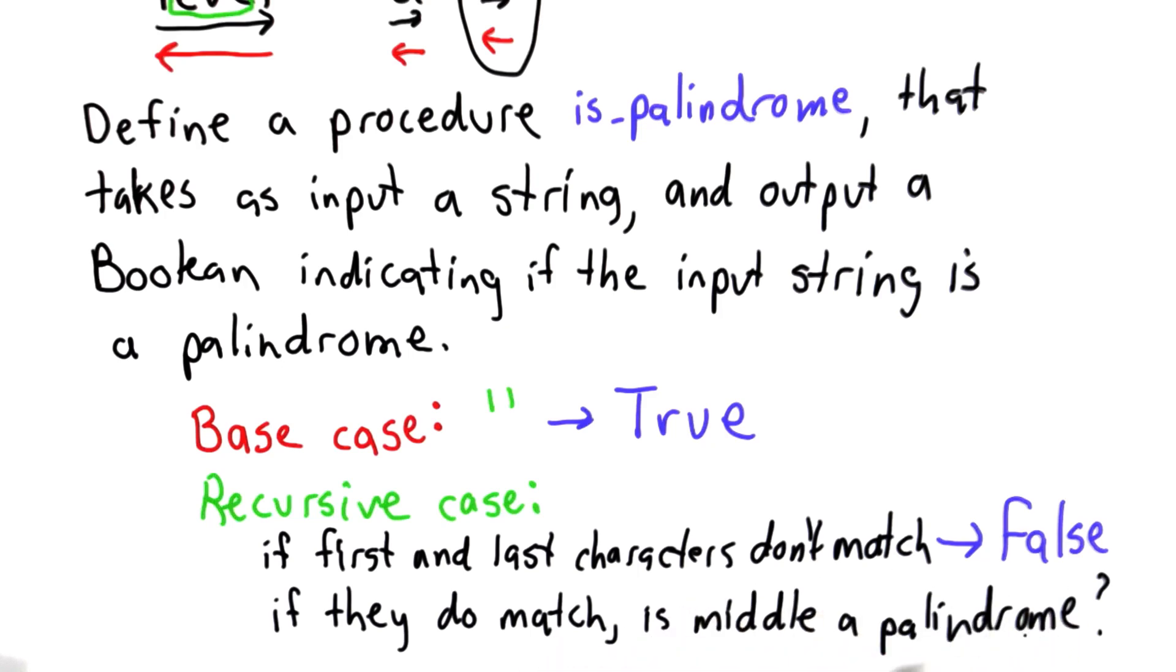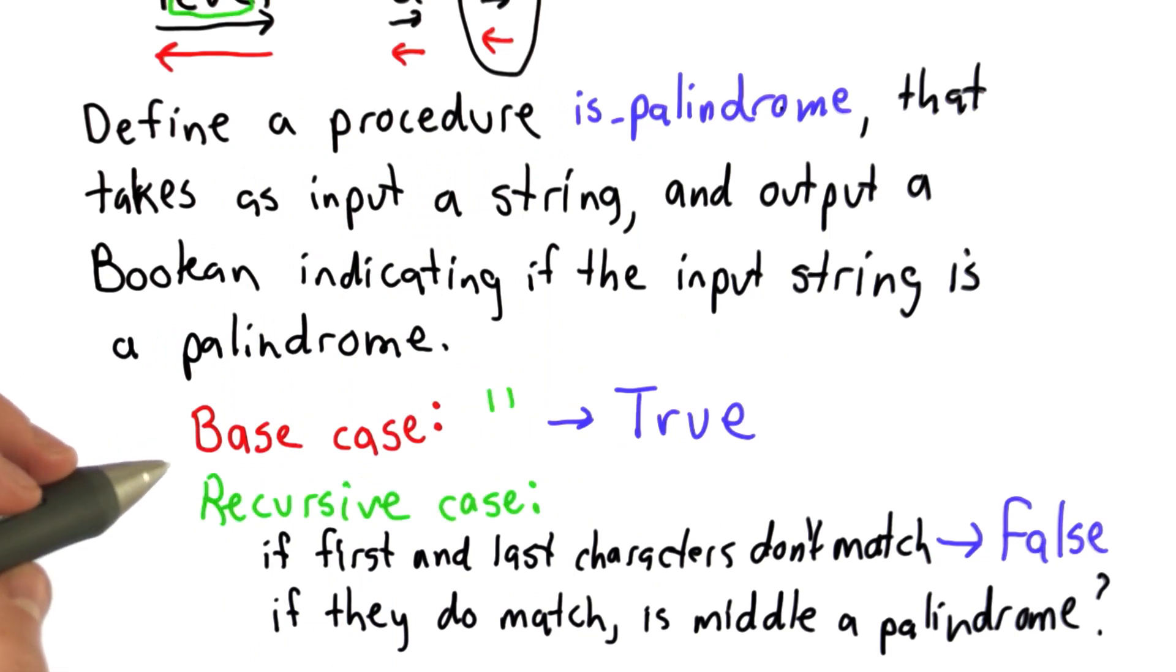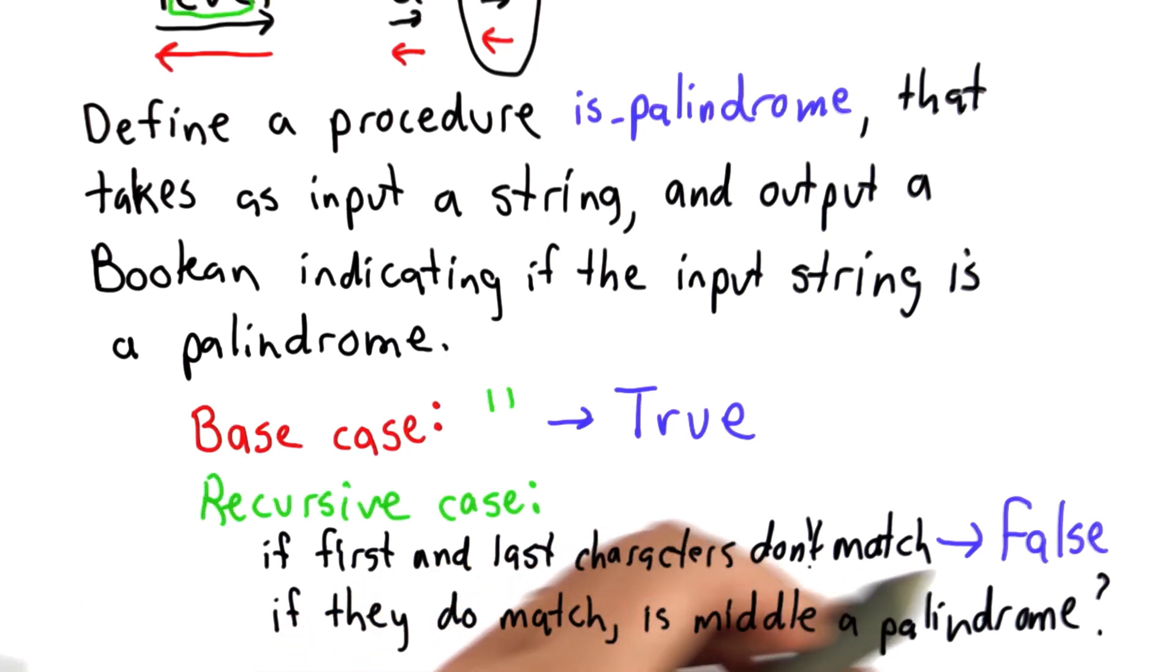In order to check whether the middle of the string is a palindrome, we can use the procedure that we're defining. This is like we were able to use factorial to define factorial in terms of a smaller number. In this case, we're defining palindrome in terms of a smaller string.